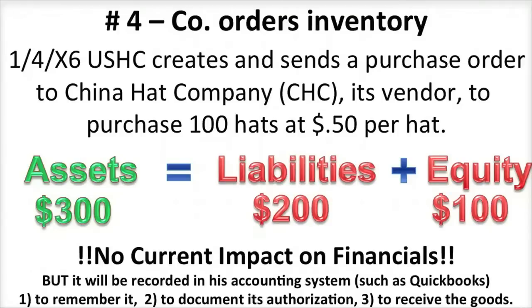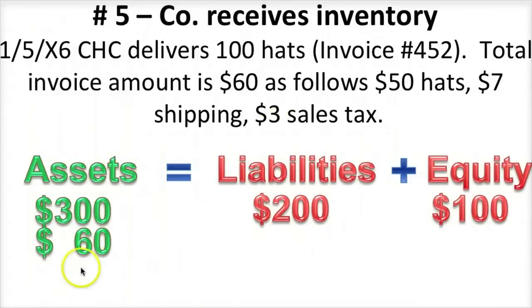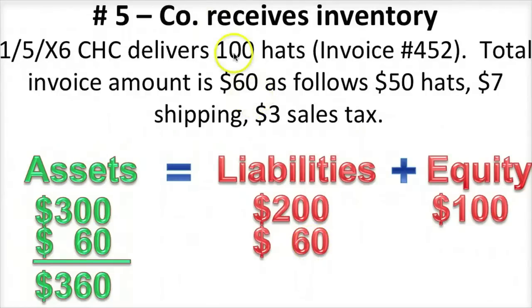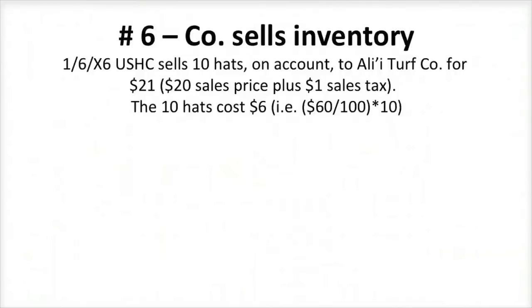On day five, we actually receive the inventory. CHC delivers 100 hats with a total invoice amount of $60: $50 for the hat cost itself (100 hats at $0.50), $7 for shipping, and $3 sales tax. Assets go up by $60, bringing us to $360 in assets. Who has claims against those assets? We now owe $60 for the invoice, making total liabilities $260. Equity did not change because under accrual accounting it's not yet an expense — we have the asset of inventory and owe the vendor for it. It becomes an expense only when we sell the inventory.